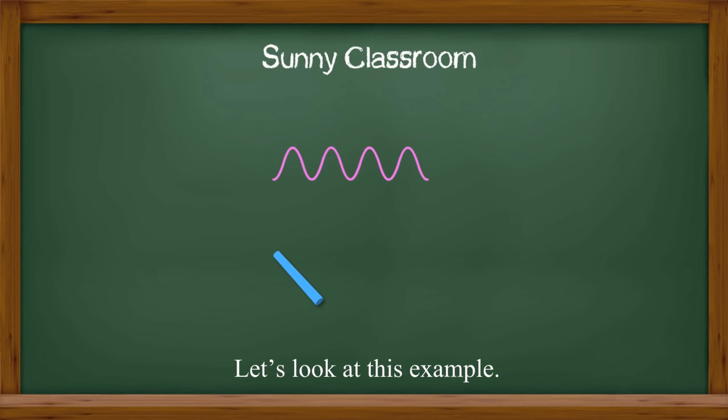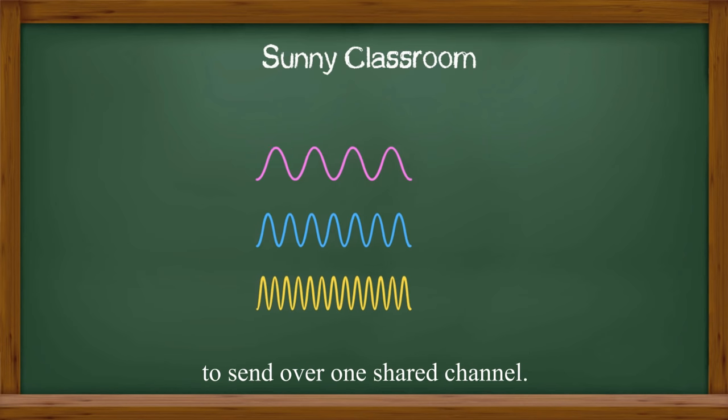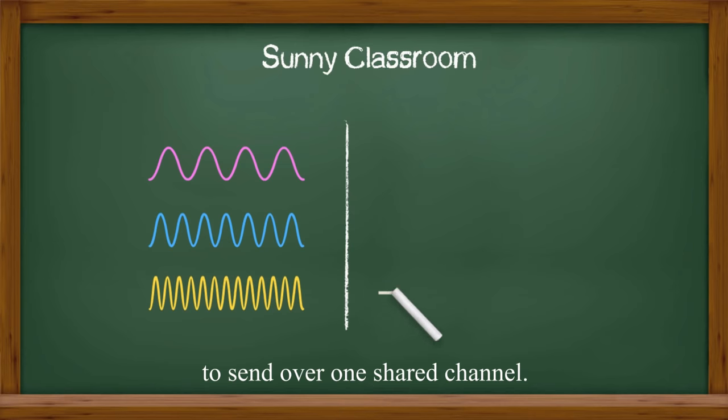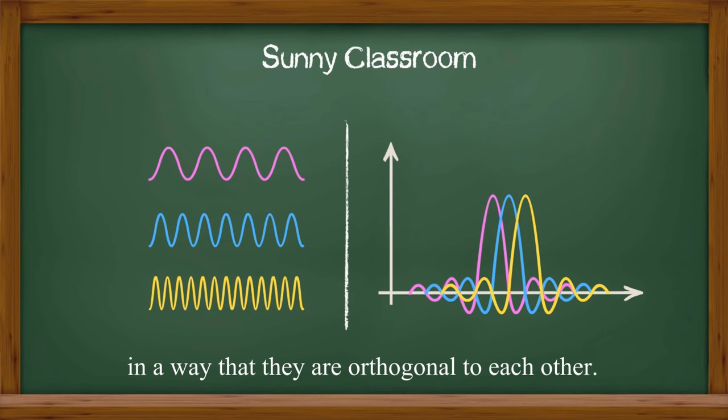Let's look at this example. Suppose we have three different signals to send over one shared channel. OFDM would combine them closely together in a way they are orthogonal to each other.